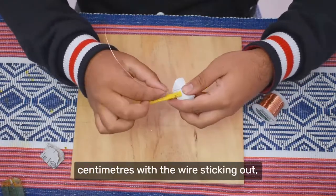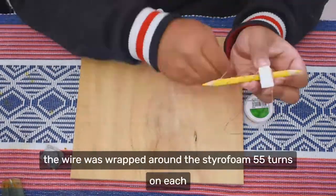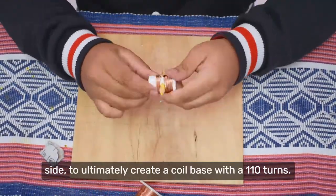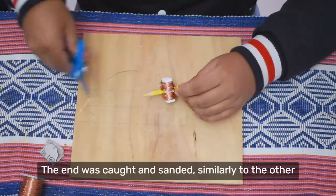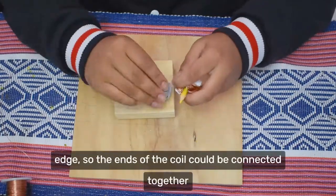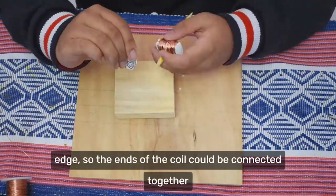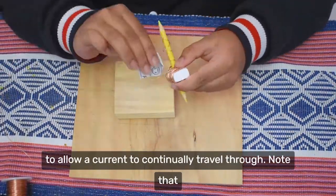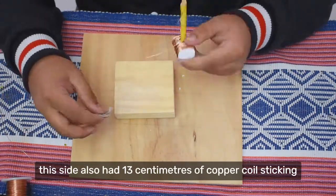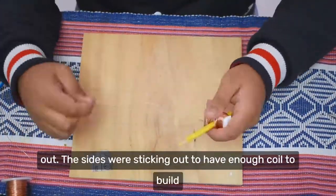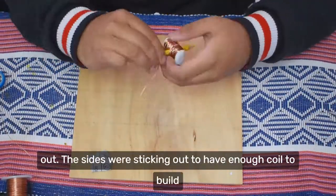With 13cm of the wire sticking out, the wire was wrapped around the styrofoam 55 turns on each side, to ultimately create a coil base with 110 turns. The end was cut and sanded, similarly to the other edge, so the ends of the coil could be connected together to allow current to continually travel through. Note that this side also had 13cm of copper coil sticking out to have enough coil to build the commutator.